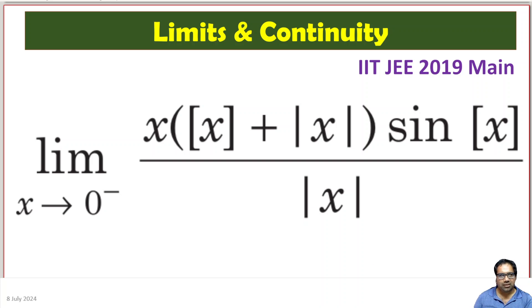We have a very simple problem that came in 2019 main. Limit x tends to 0 minus: x times greatest integer function of x plus absolute value of x, whole of this times sine of greatest integer function of x, by absolute value of x.